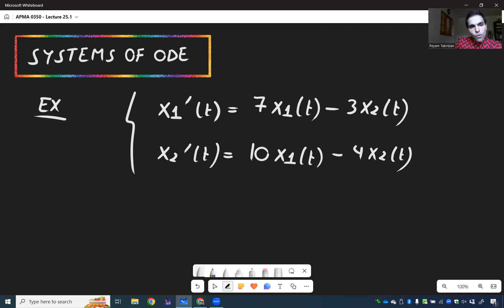where again, x1 and x2 are functions of time. So x2 is x2 of t.